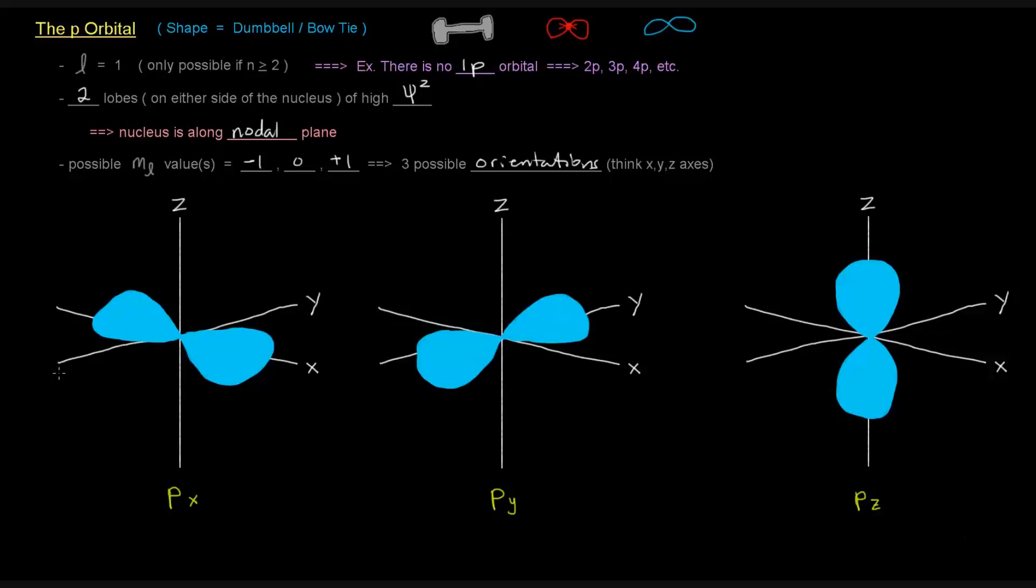So in the case of the x orbital, the plane that the y and z axes make is the nodal plane, which means that that's the plane where the electron cannot be located. And in the case of the y, it's the x and z axes that make up the nodal plane.